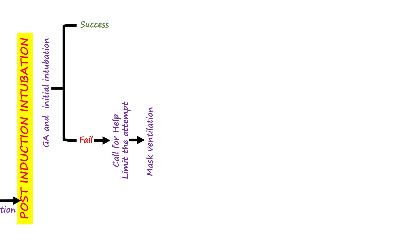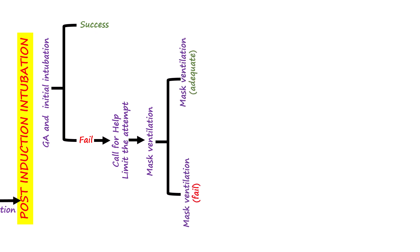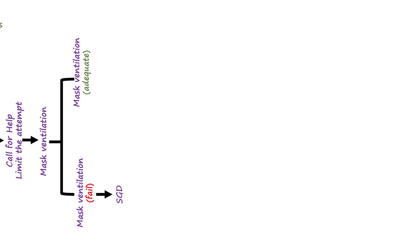Repeated intubation attempts increase the risk of edema, laryngospasm, and bronchospasm. To optimize the success of the second attempt, it is necessary to first ventilate the patient to replenish the oxygen reserve. Ventilation is most often performed with a face mask, with or without an oral airway. If face mask ventilation fails, a supraglottic airway device should be used. Depending on whether ventilation and oxygenation are adequate, two different pathways emerge.